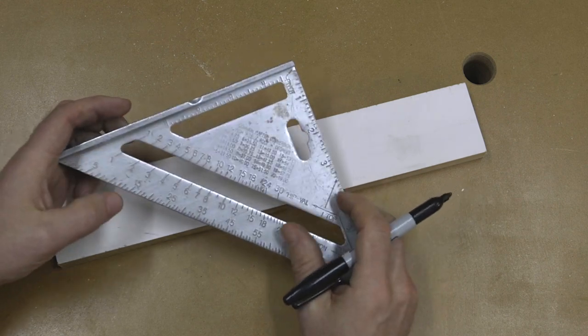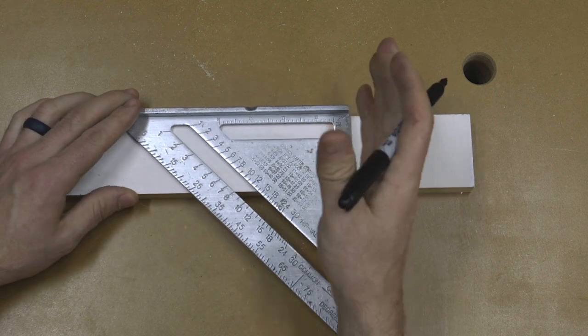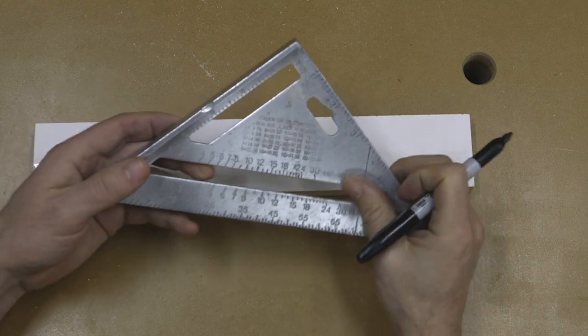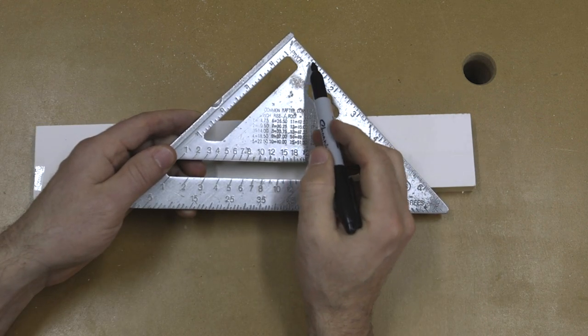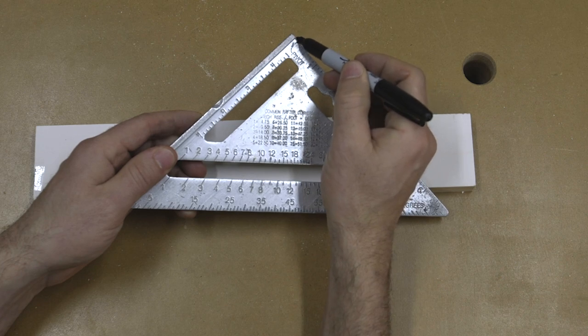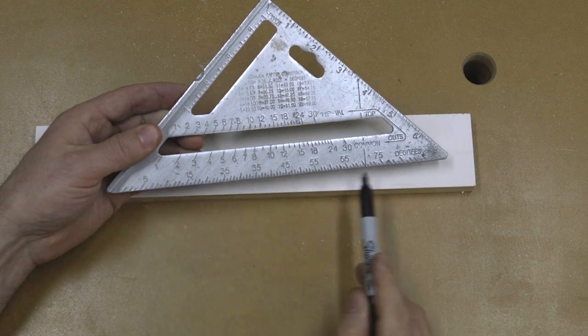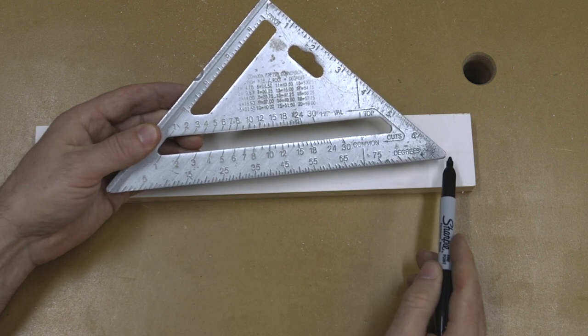The third way to use this tool is as a protractor for finding different angles for different cuts. If you look at the square itself, there is a word that says "pivot" with an arrow. This is the pivot point of this tool. And at the bottom there's degrees, and it goes from zero all the way to 90.